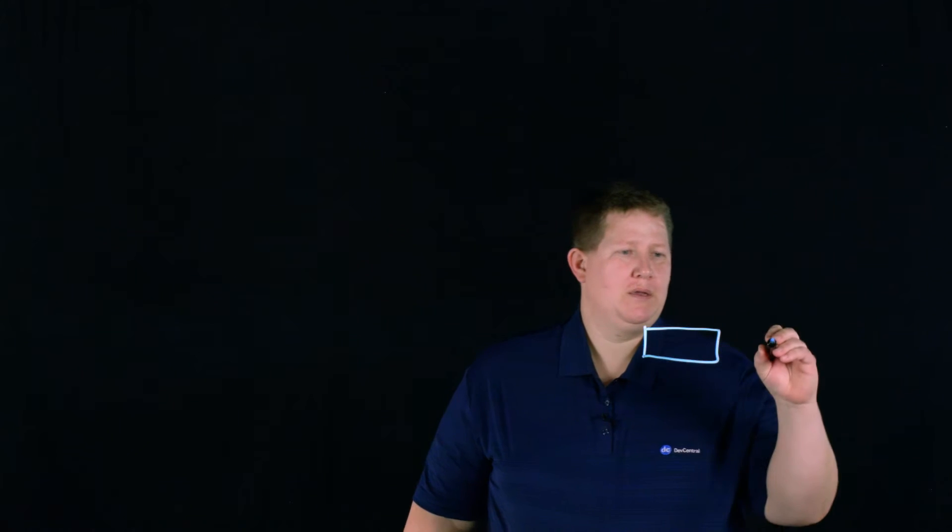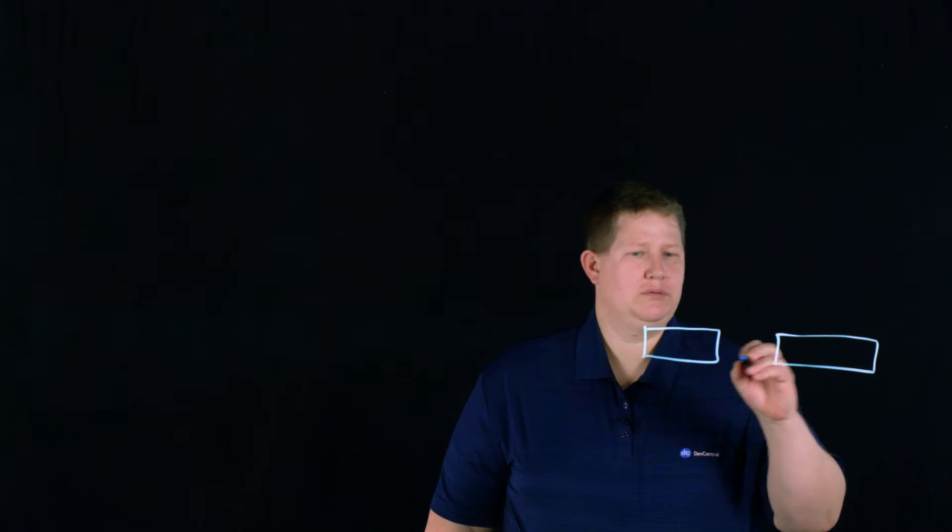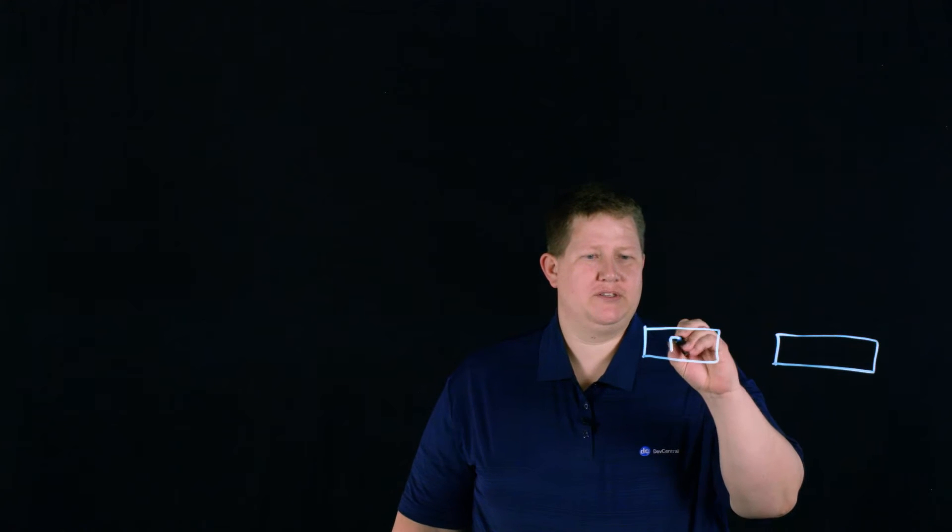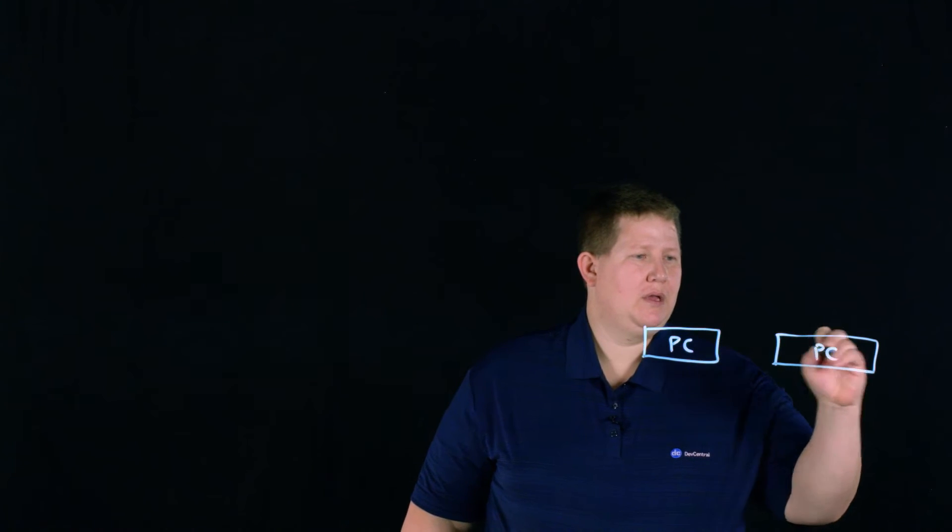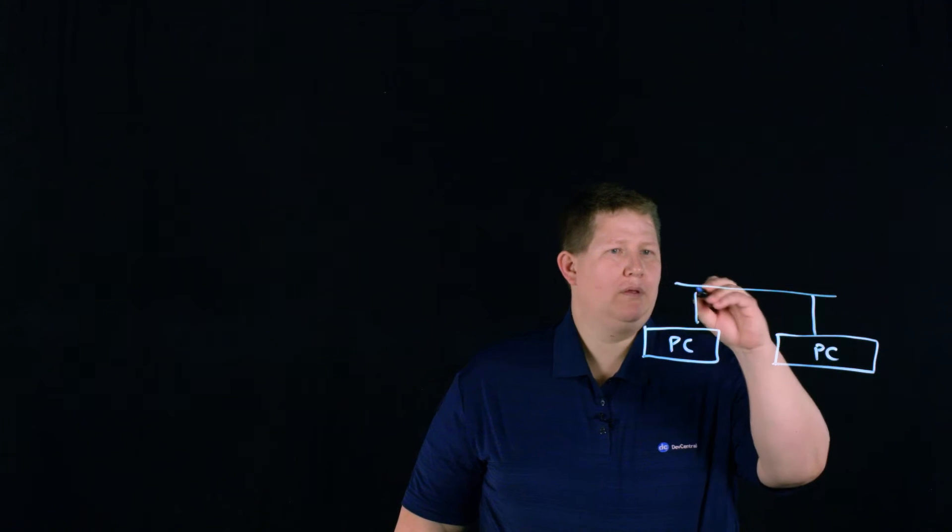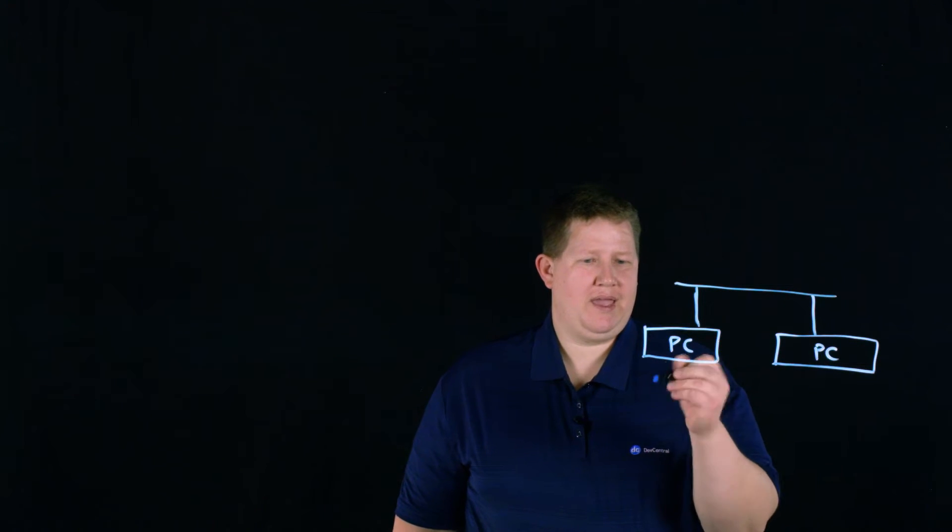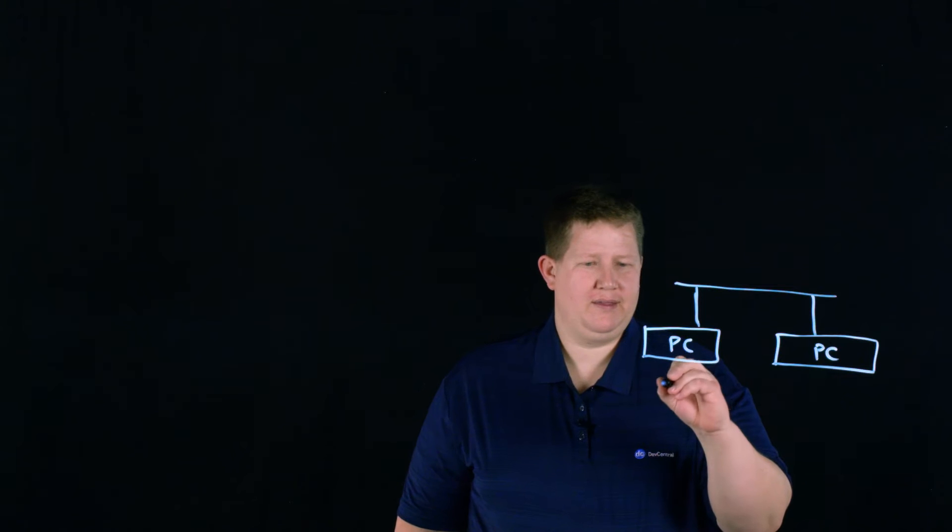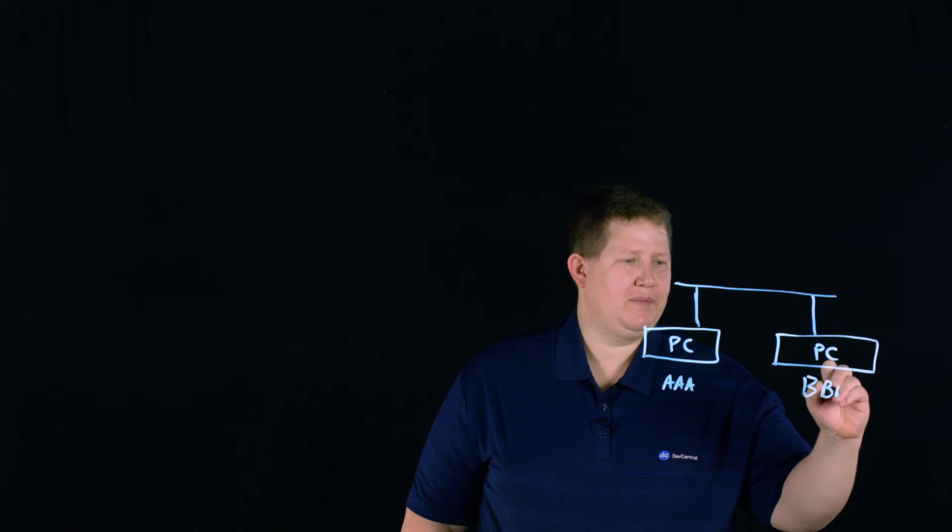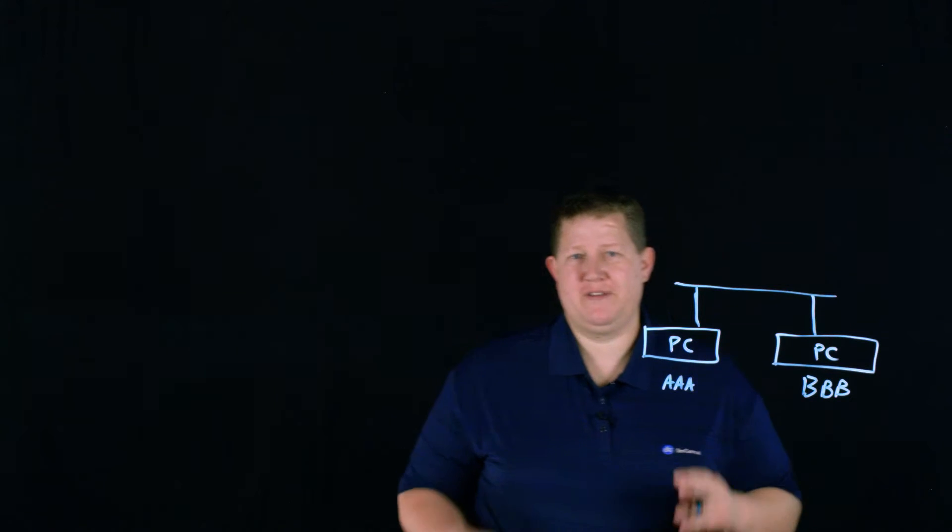So how ARP works and what it's for. You have, say, two servers, desktops, doesn't matter. Let's just say we have a couple PCs on an Ethernet LAN. And they have a MAC address, let's say AAA, and this one has a MAC address of BBB. And so that's their physical address.